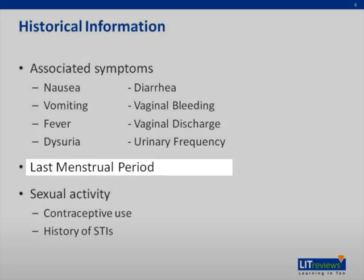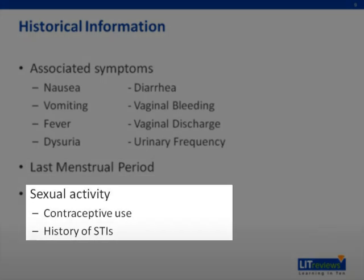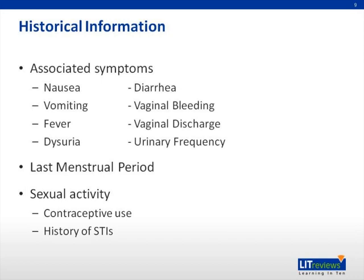In the young female, ask when their last menstrual period was, whether they are sexually active, and if so, what types of contraception they are using. A history of STIs can all be extremely important in this patient population, in particular the young female.